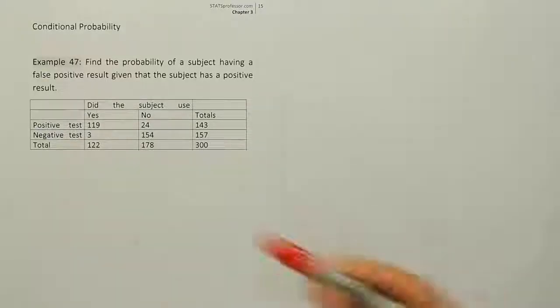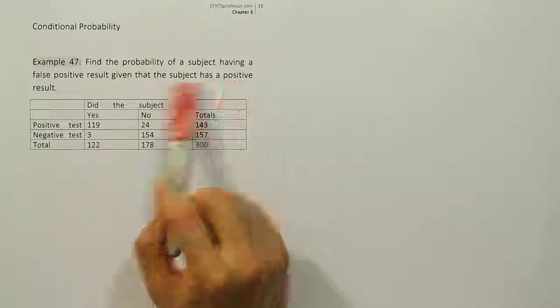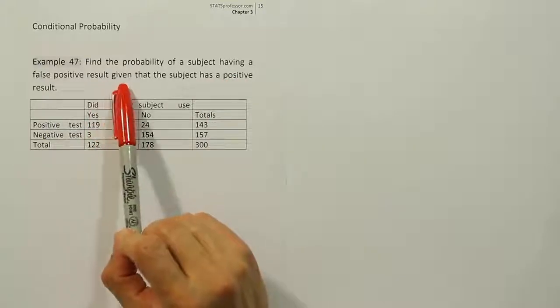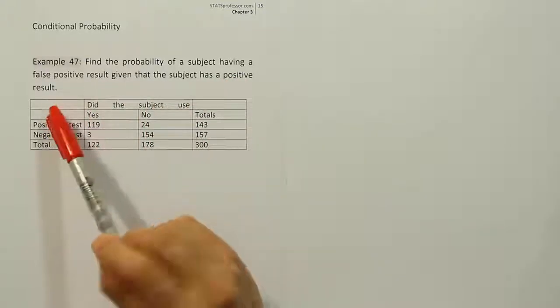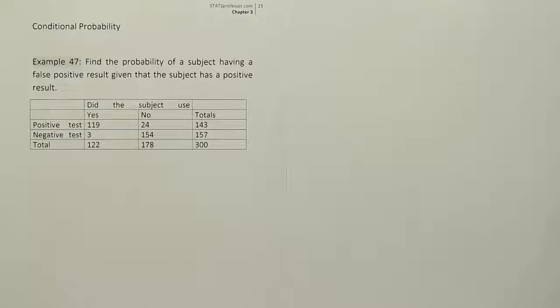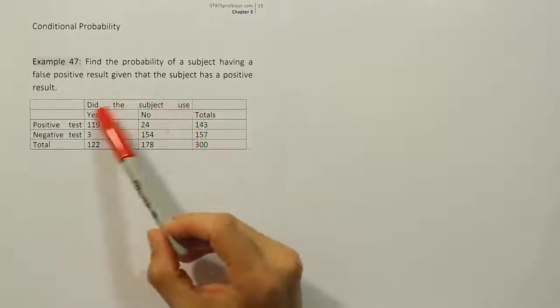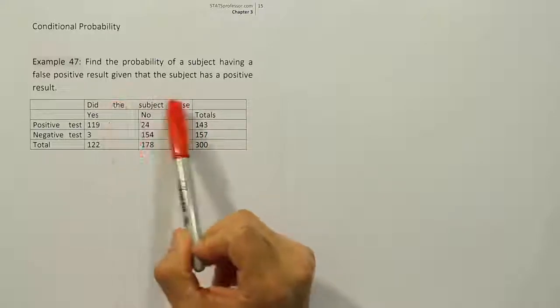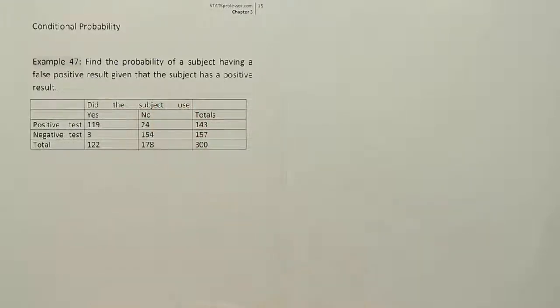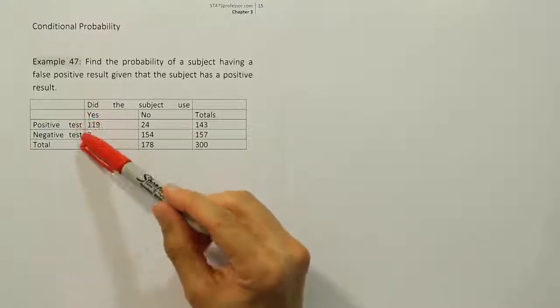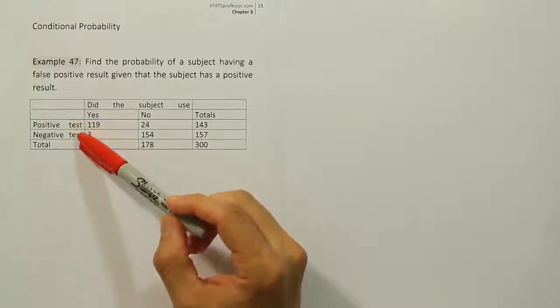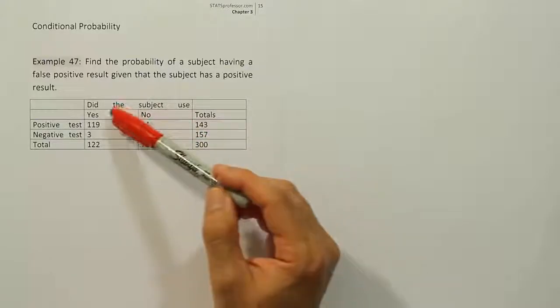Example 47. Find the probability of a subject having a false positive result given that the subject has a positive result. Okay, so in this problem, the table has been a little cut off the wording here, but basically the test results were based on whether the subject was using marijuana or not, and they had urine-based drug tests that were trying to detect the marijuana usage.